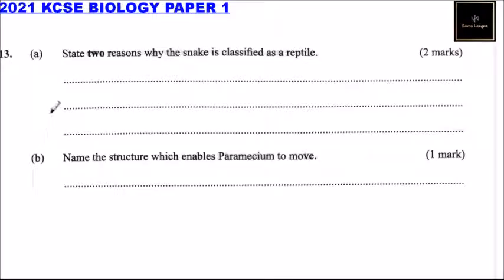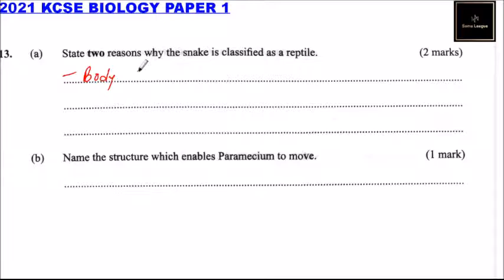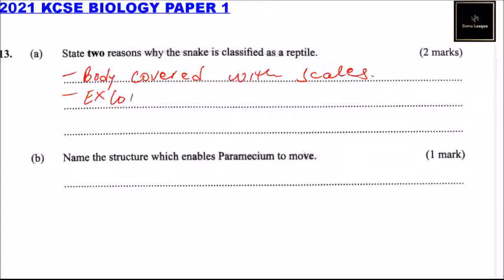Question number 18, Part A: State two reasons why the snake is classified as a reptile. One reason is its body is covered with scales. Another reason is it is ectothermic, also known as poikilothermic.